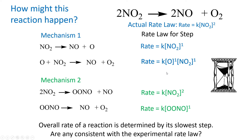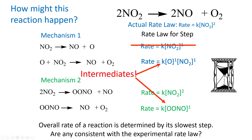The first step of mechanism one can't be the slowest step, because it predicts [NO2]¹, and we know experimentally the order is [NO2]². For the second step of mechanism one, we get a rate law involving the concentration of O — an intermediate we can't directly measure. We want rate laws expressed in terms of reactants, so we need to get rid of that intermediate mathematically.